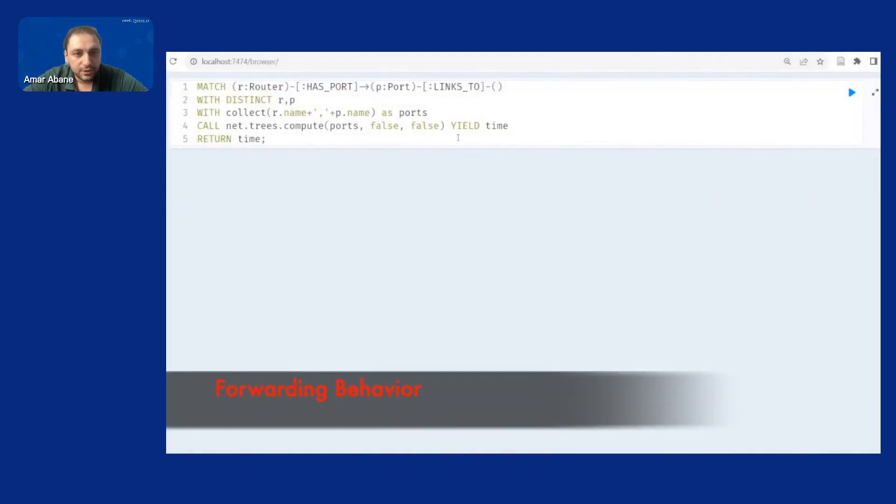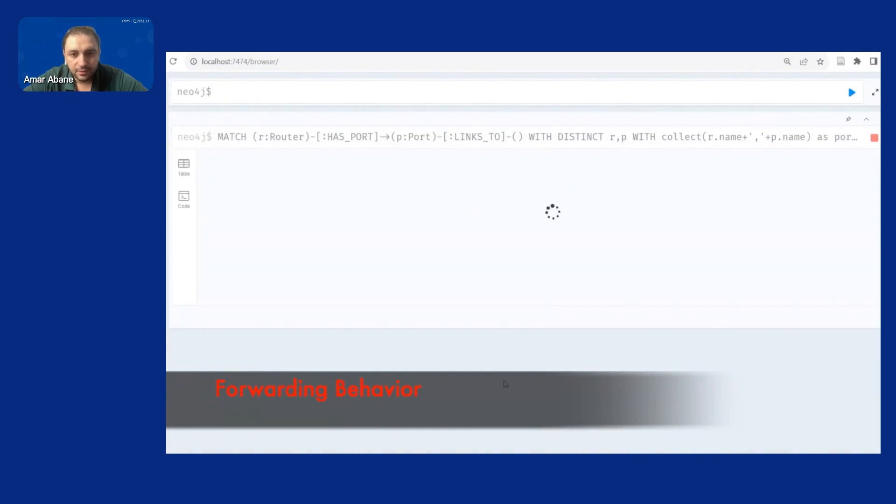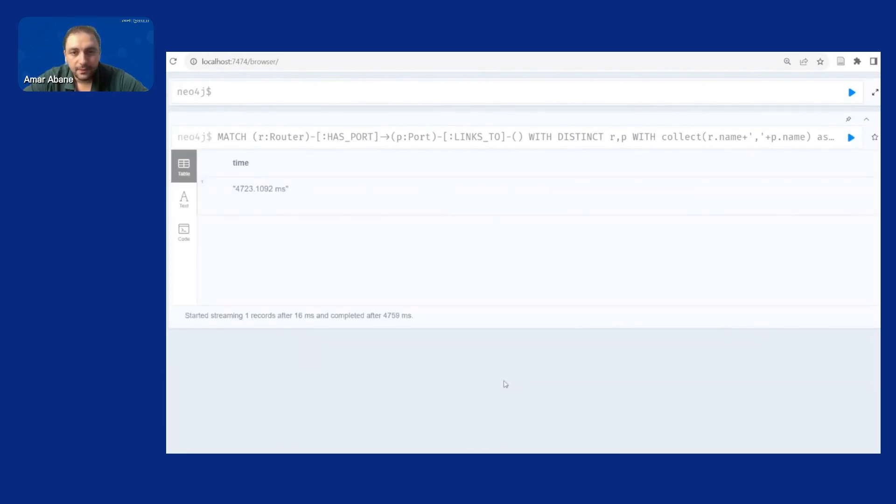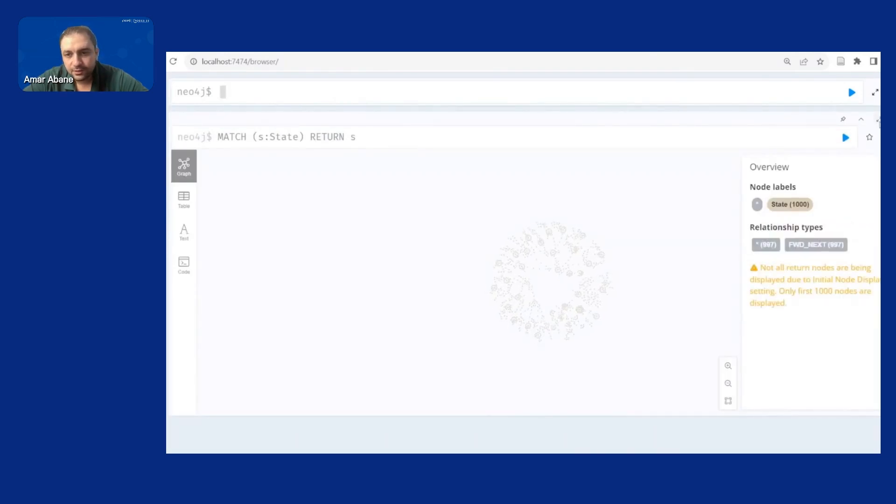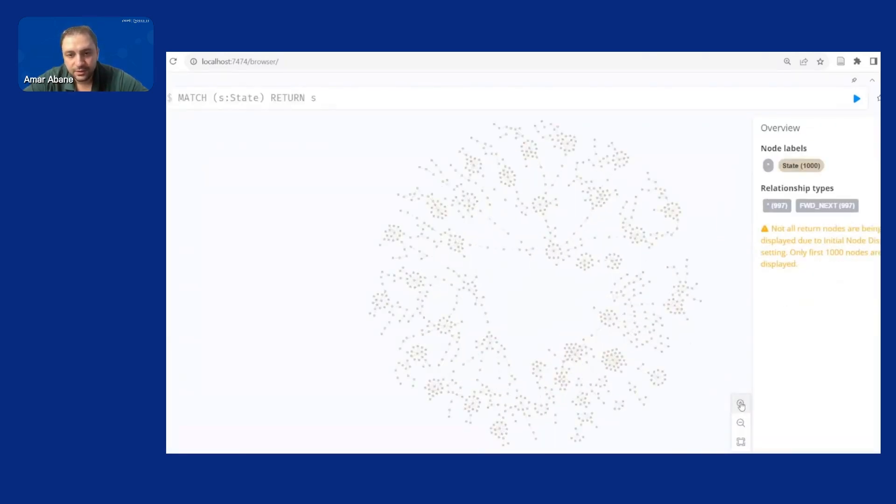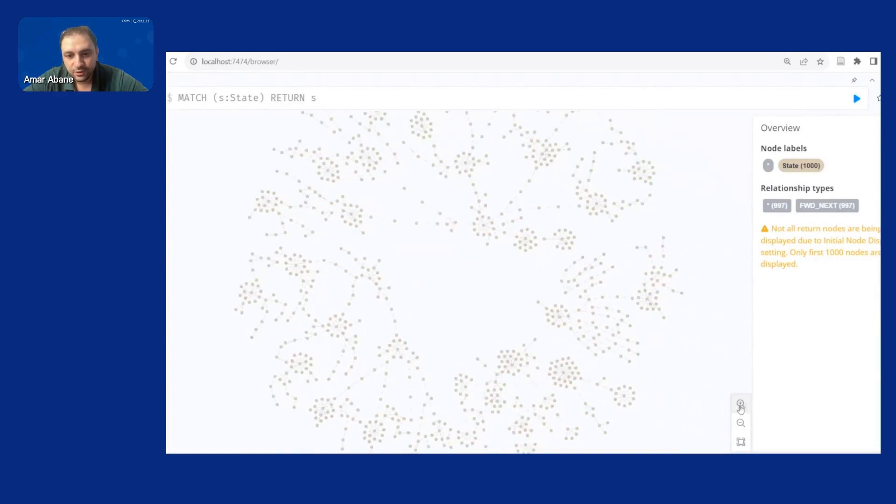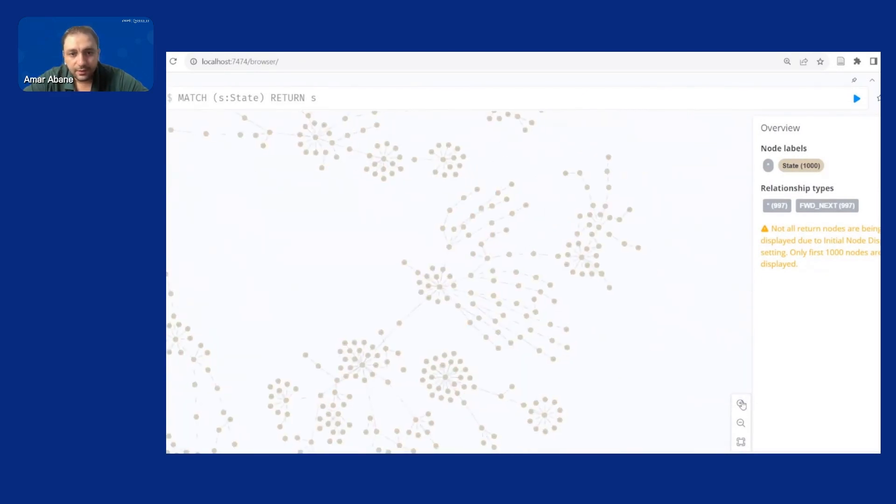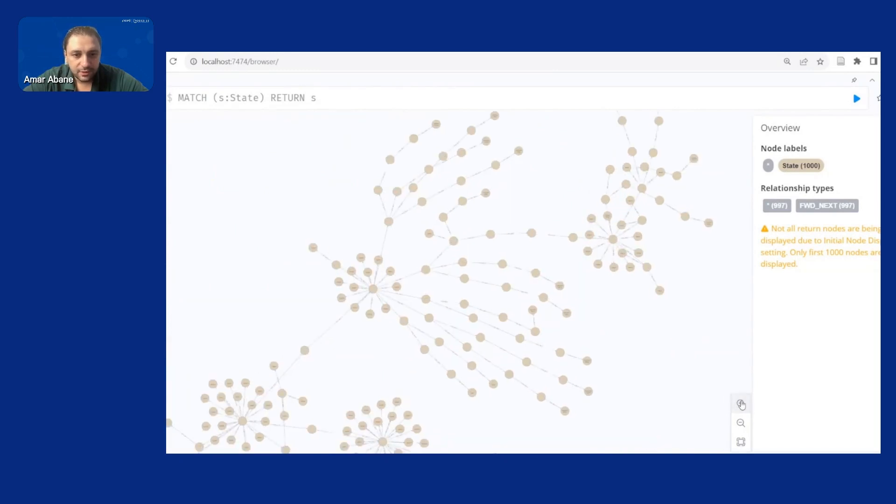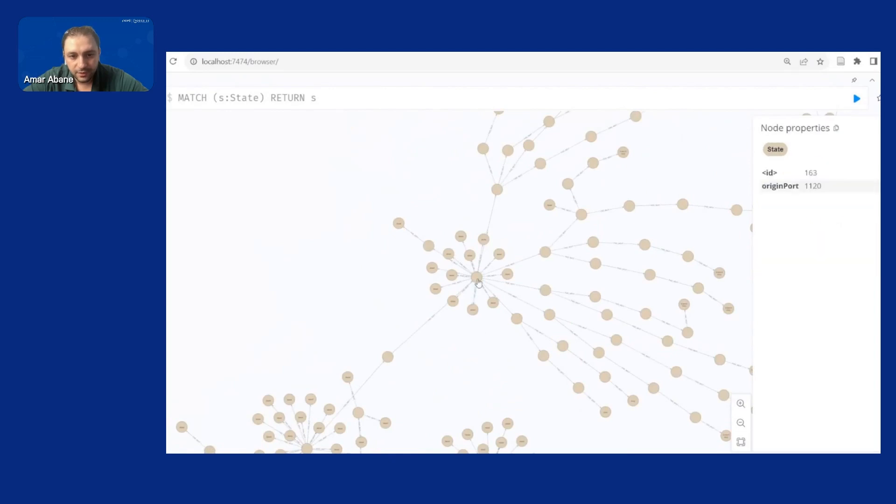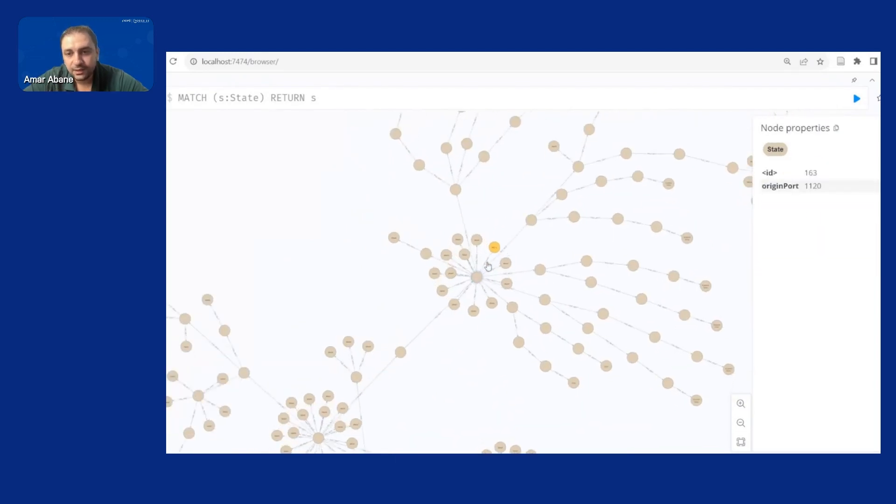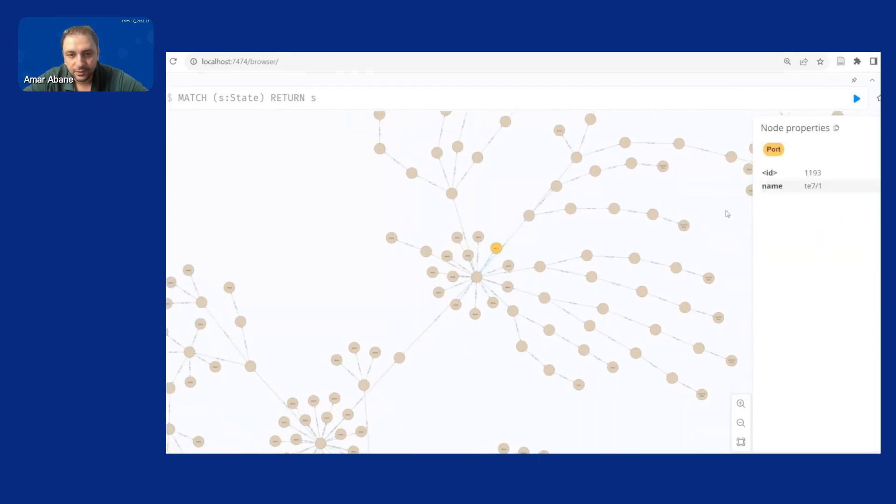Then we compute reachability trees with different parameters depending on the level of details we want for the forwarding behavior. Then once these are computed these are computed once and then we can basically play with this to change representations or to look for information so these are the reachability trees you can see each node here represents a possible next hop with the associated packet headers that will be forwarded to that next hop.